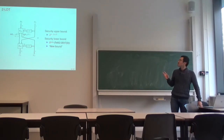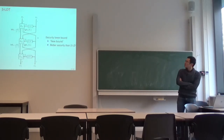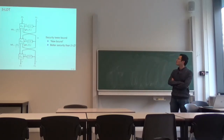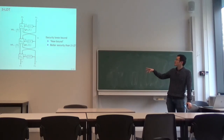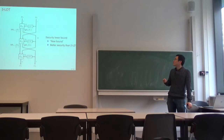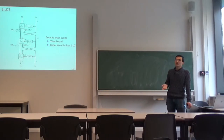Our new bound, for some cases, achieves beyond-birthday-bound security. We also consider the three-runs LTT case. This is the first time we examine the three-runs case. We prove the security of three-runs LTT using a combination of chi-squared methods and harmonic permutation primitives. The security of three-runs LTT is actually better than that of two-runs, and for some cases we can even achieve optimal n-bit security.